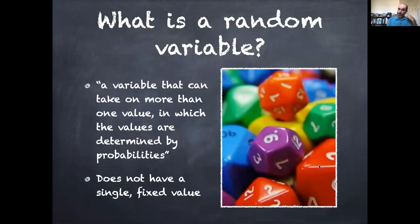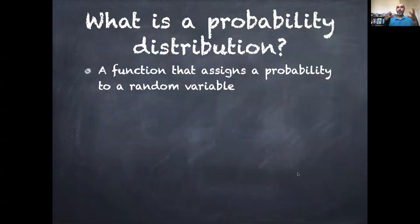So if a random variable is a variable that can take on more than one value with those values determined by probabilities, then a probability distribution is a function that we use to assign those probabilities to random variables.